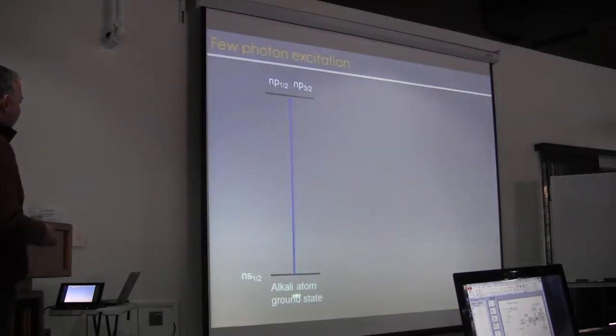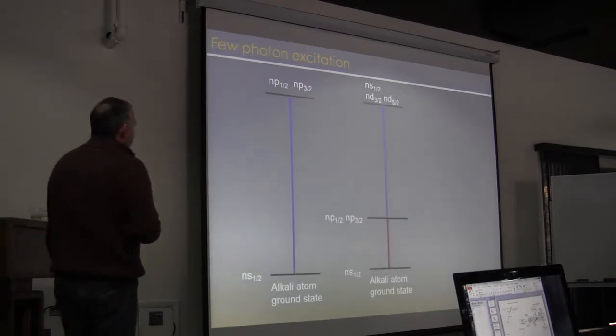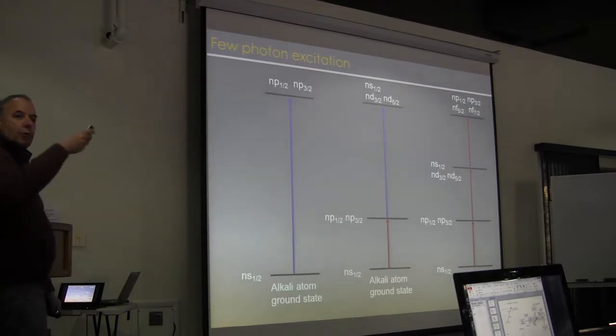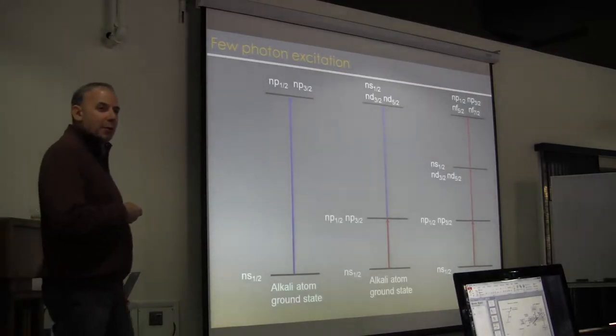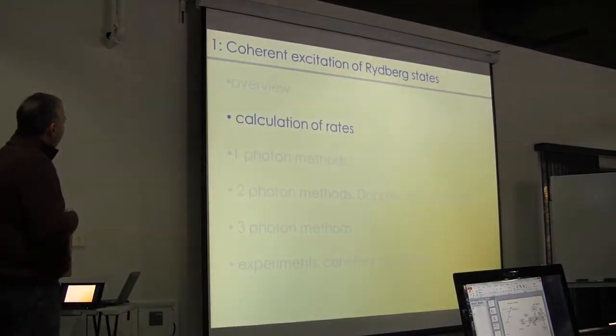Basically, if I take my alkali atom as my prototypical example, we start in an S state with one photon, we can go up to a P state, which we've already heard about. With two photons, we can go through a P state and end up in S or D states, and if I took a three-photon excitation, we could end up with three photons in a P or F state. Of course, we could do four, five, or six-photon excitation if we wanted to. No one has had any particular need to do that so far.